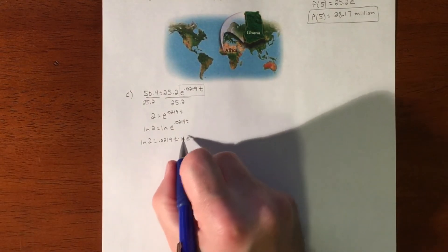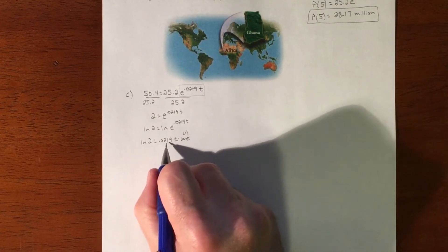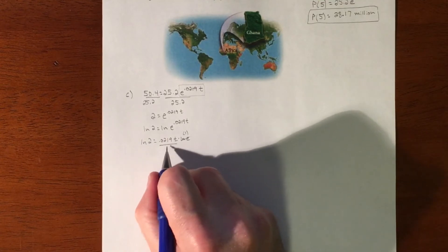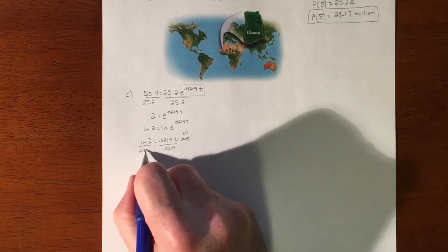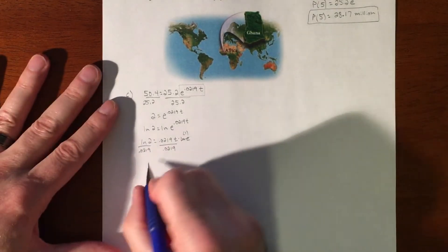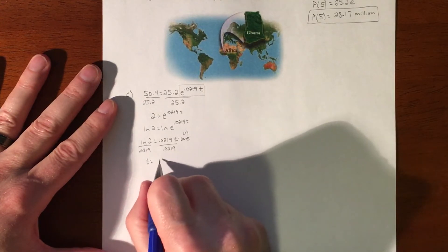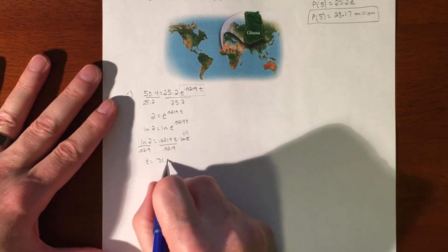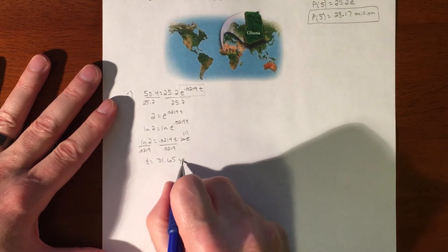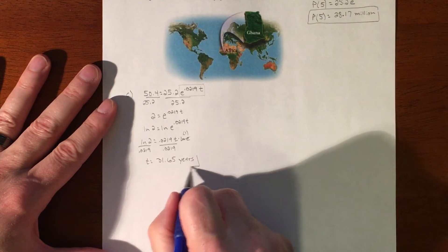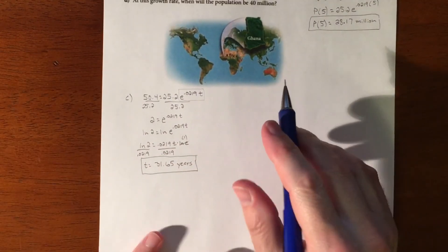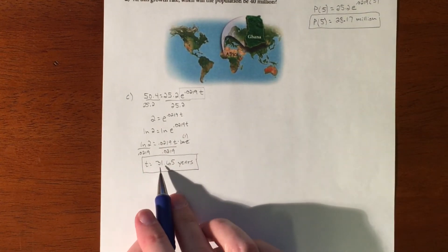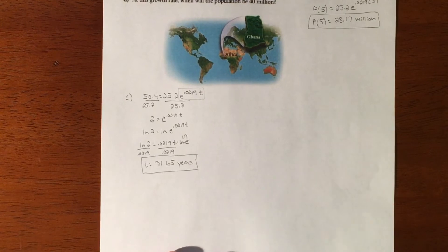So this piece, the natural log of E is just 1. So really you're just left with 0.0219 times T equals the natural log of 2. We'll divide this to isolate our T. And so we're getting T to equal roughly 31.65 years. So with the rate of growth of 2.19%, the population in Ghana is going to be doubling roughly every 31 to 32 years if it maintains that same growth.